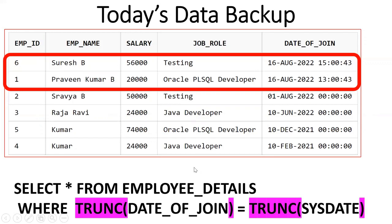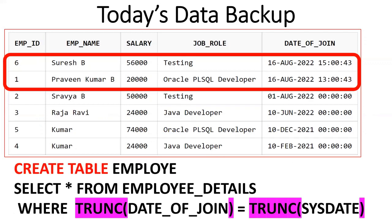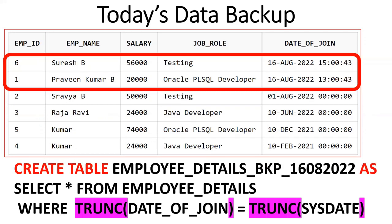Now I want to create the backup table using CTAS. CREATE TABLE employee_details_BKP_1608_2022 AS SELECT * FROM employee_details WHERE TRUNC(date_of_joining) = TRUNC(sysdate). The table is named so that by seeing it, we can understand this is the employee details backup for 16th August 2022. Two records will be created in this particular table.